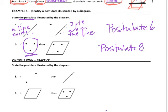For the on-your-own practice problems, use the postulates to match the diagrams. For number 1, read it as: if there are two points, then there exists exactly one line — find that postulate. For number 2, if there is a plane then there are three non-collinear points that exist on that plane — look for that order of information in the postulate.